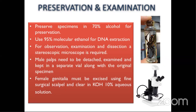Potassium hydroxide can be used as a warm solution at about 40 to 45 degrees Celsius to reduce the processing time. Usually, if we use 10% KOH at room temperature, dissolving soft tissues from the female genitalia takes about overnight. But with a warm KOH solution, that duration can be reduced.